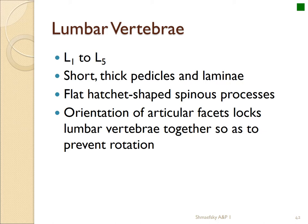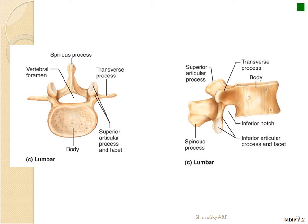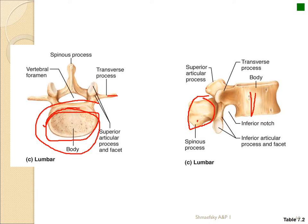The lumbar vertebrae — five of them — are the biggest and thickest, with huge wing-like transverse processes and a massive body because they take the most weight. The vertebral foramen is similar in size to the thoracic, but the body is enormously thick. The key feature is a stubby, wide spinous process, providing a large surface area for back muscle attachment to support the weight of the body.